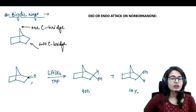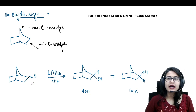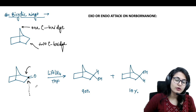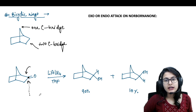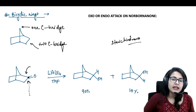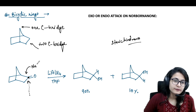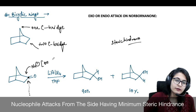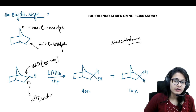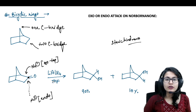The carbonyl could be attacked by any nucleophile — it could be a hydride or another nucleophile. It could be attacked from two ways: either from the top or from the bottom. How we decide where it attacks depends on steric hindrance. If the nucleophile attacks from the top, we call it exo attack; if from the bottom, we call it endo attack.